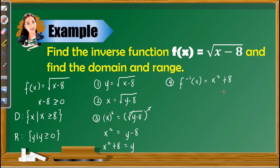As we can see, the inverse is a quadratic function, which is not considered one-to-one. Therefore, we need to limit the domain values. To do that, we simply interchange the domain and range of the given function. The domain x ≥ 8 becomes the range of the inverse: y ≥ 8. The range y ≥ 0 becomes the domain of the inverse: x ≥ 0.